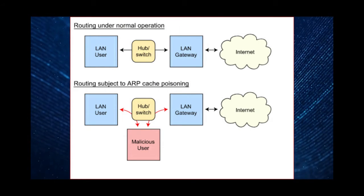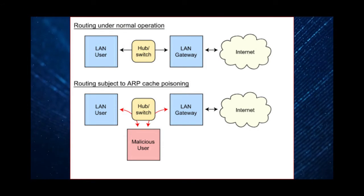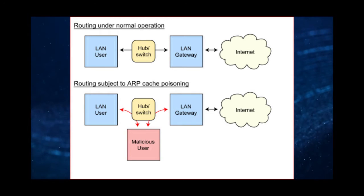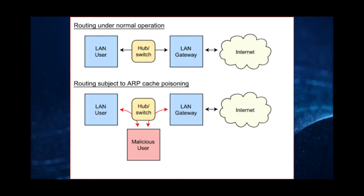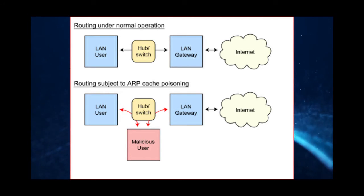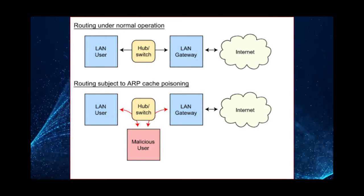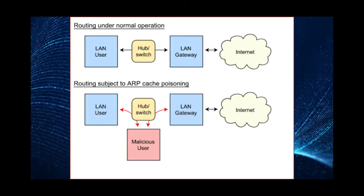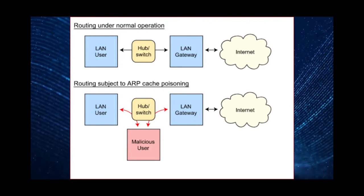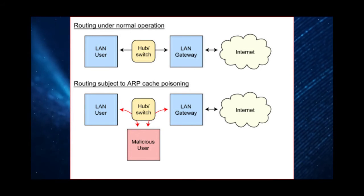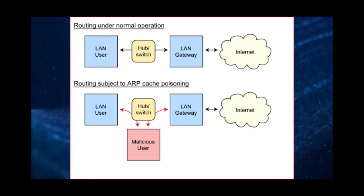Now let's come back to ARP spoofing. What is ARP spoofing? It's nothing but someone in the network trying to present himself as the available device to respond to the original request coming from the source user. In a normal routing operation, the LAN user connected to a switch or hub will try to reach the internet based on Layer 3 routing.